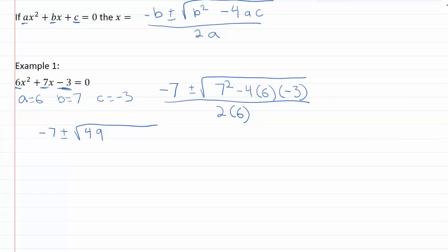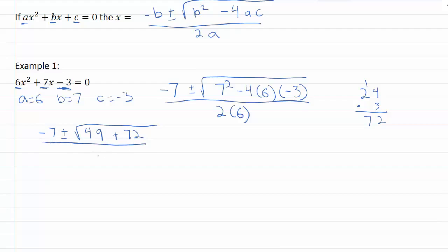We've got minus 4 times 6 is 24, times 3. Let me work that out in the margin: 3 times 4 is 12, 3 times 20 is 60, so that gives us 72. And over 2a, that'll be 12.